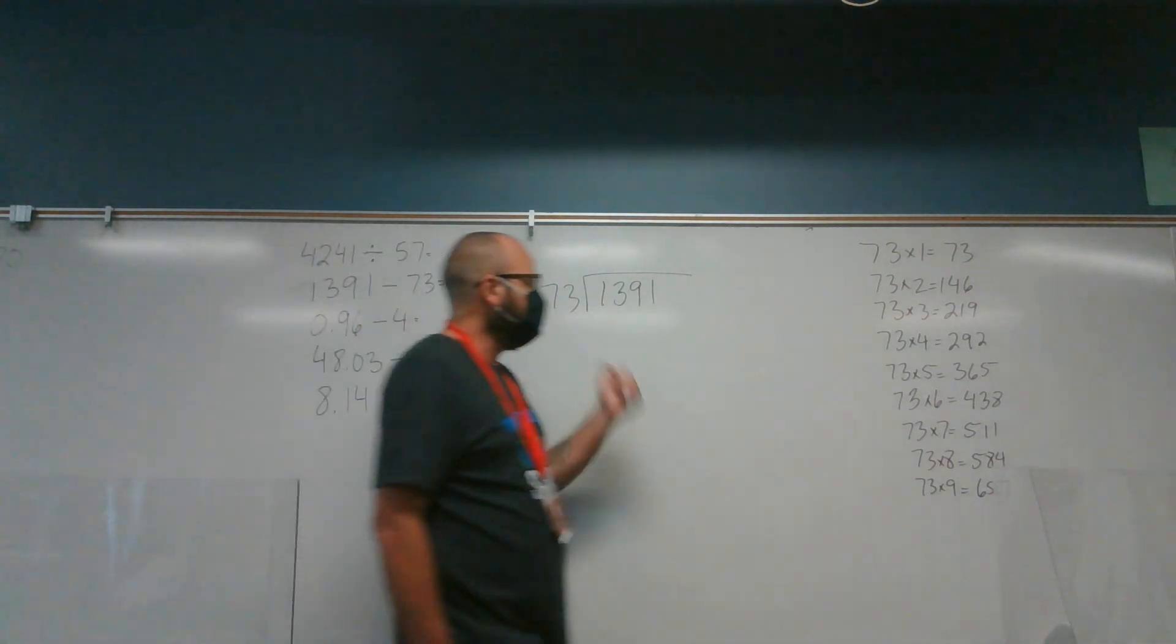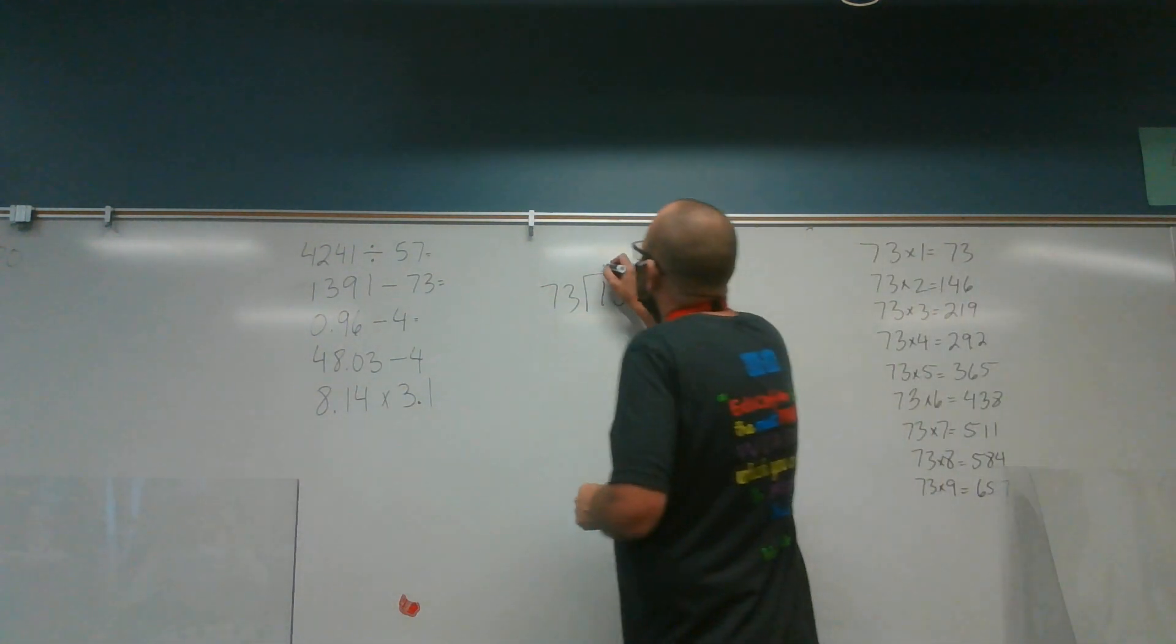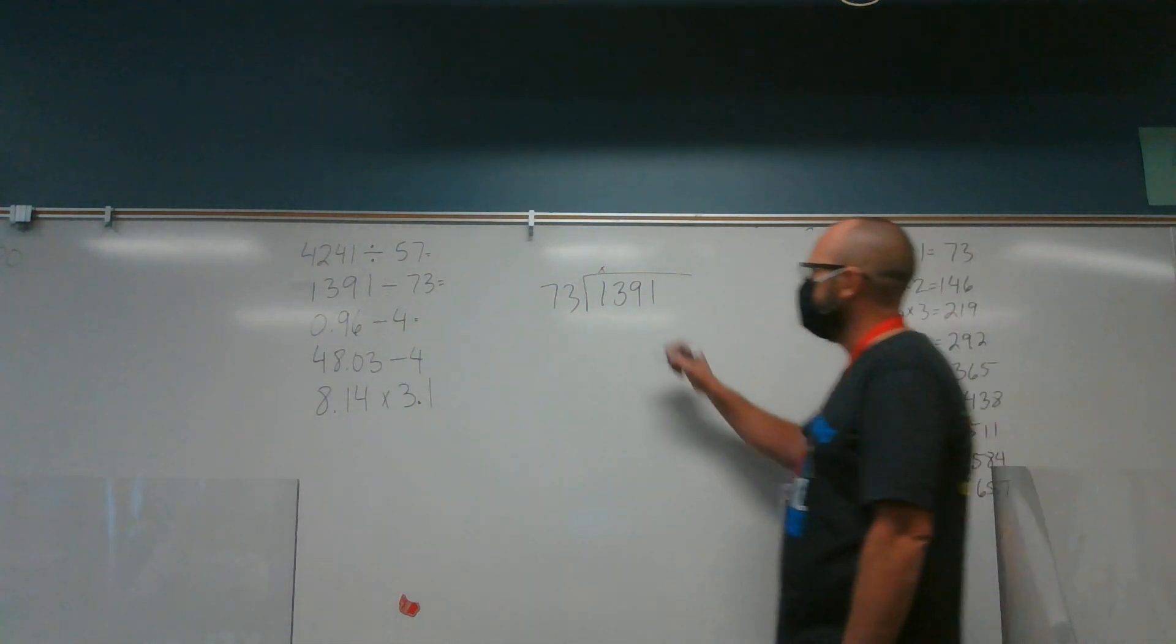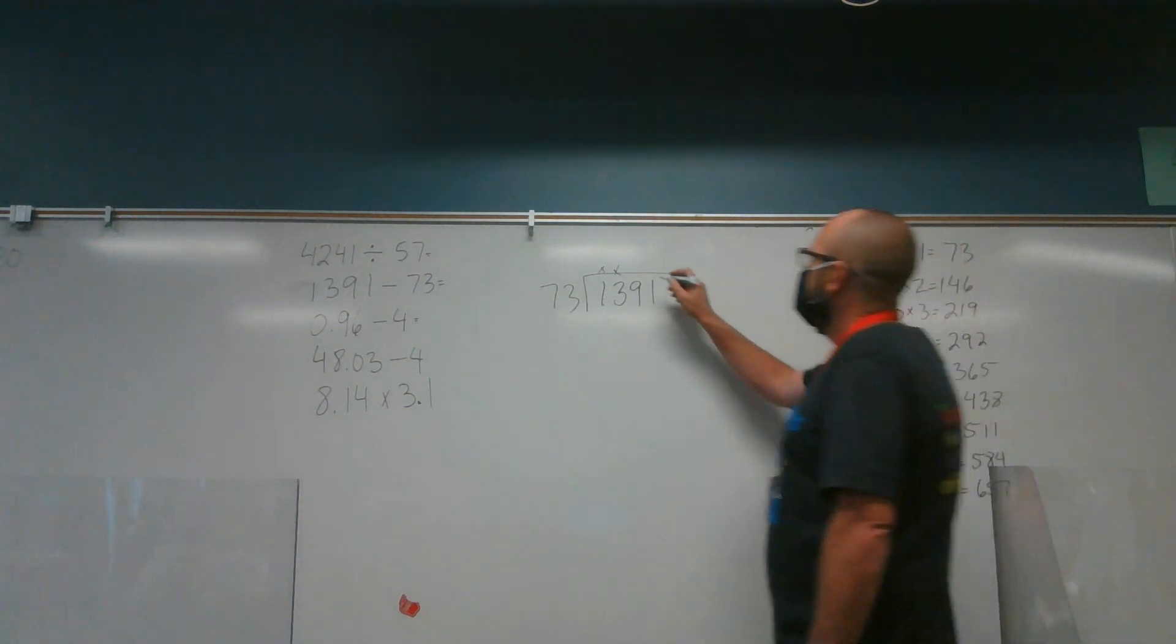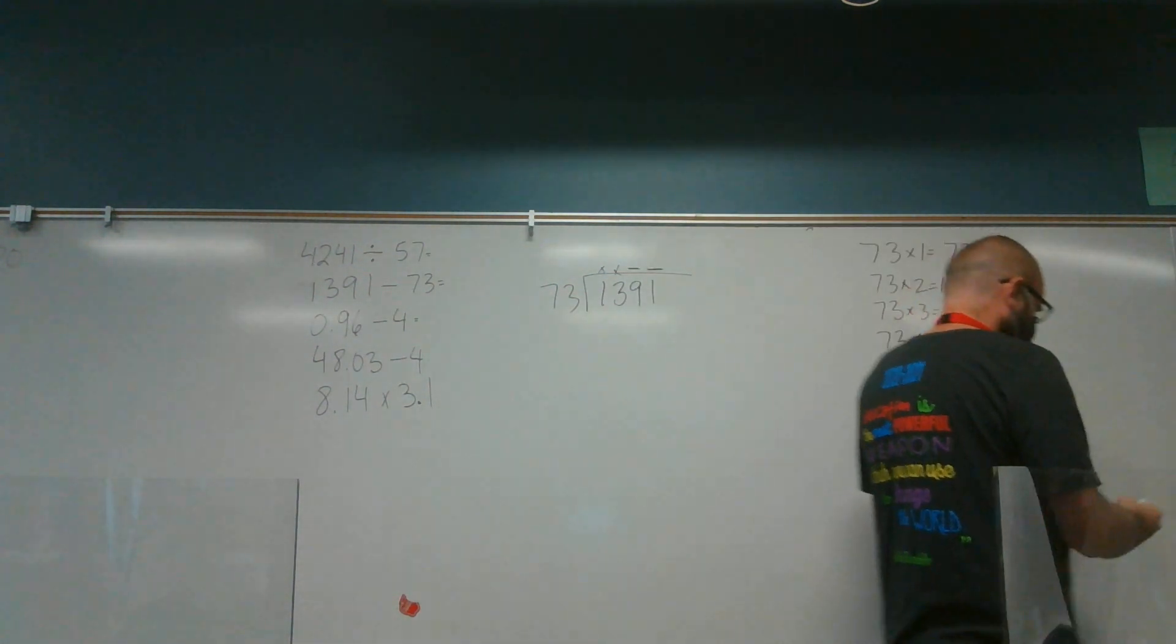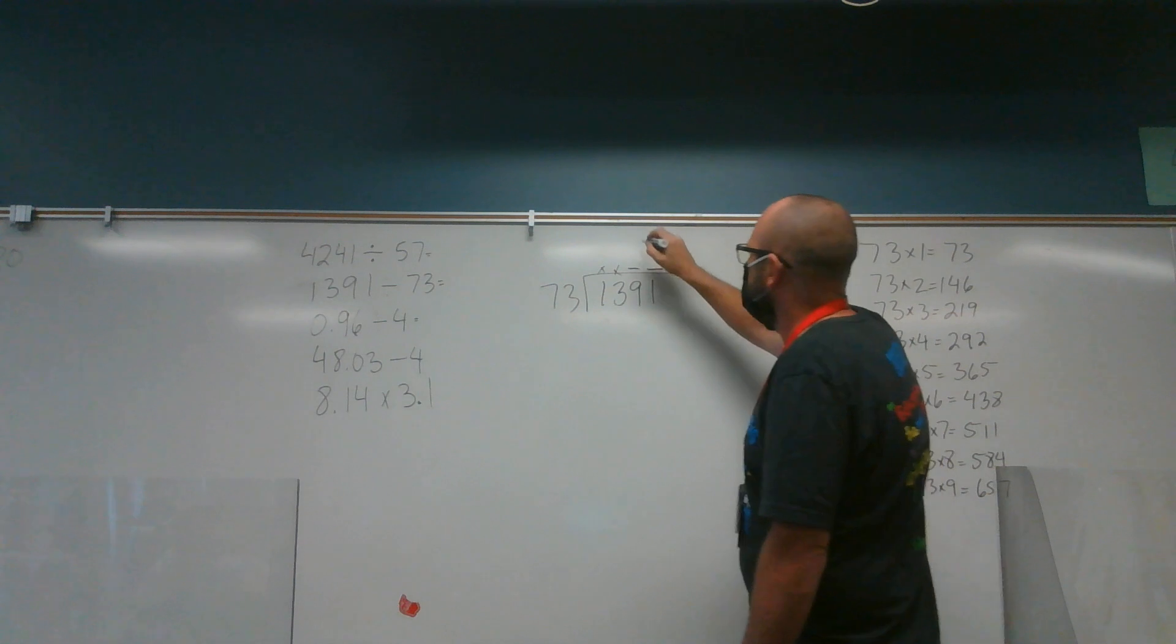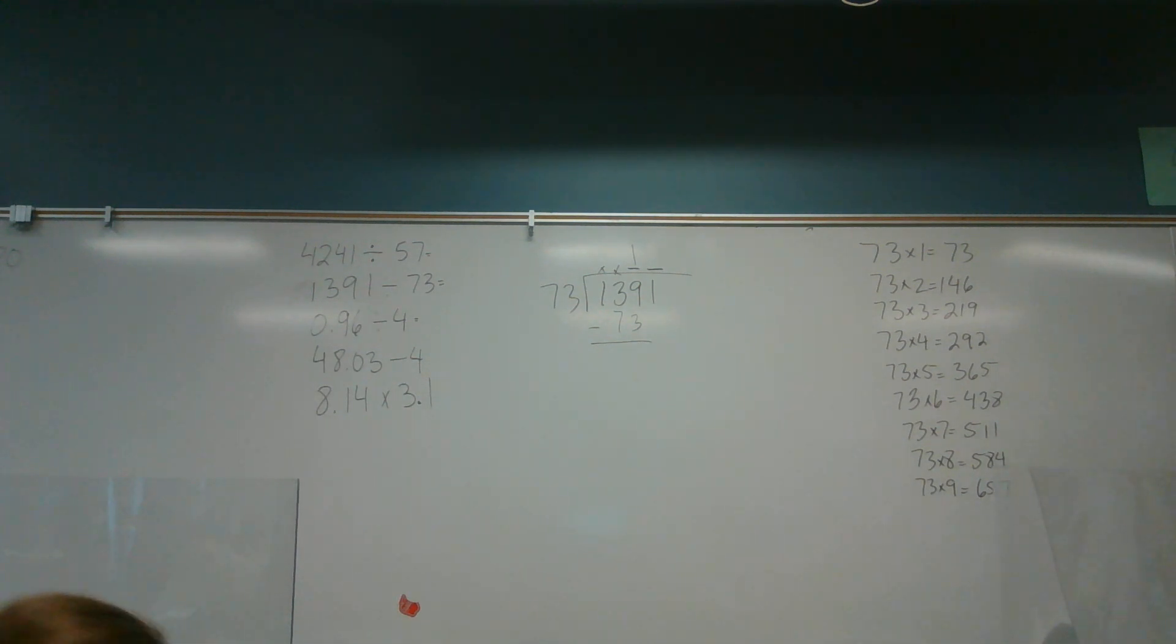So I ask myself, self, does 73 go into 1? My self says no. I ask myself, self, does 73 go into 13? My self says no. I ask myself, self, does 73 go into 139? My self says yes. Which means I'm going to have a two-digit quotient. And if I look at my multiples, 73, 146. 146 is too big. So 73 times 1. And I find the difference of 139 and 73, which is 66.